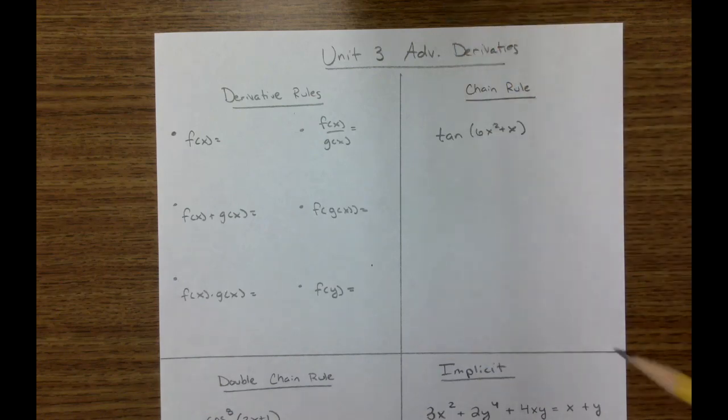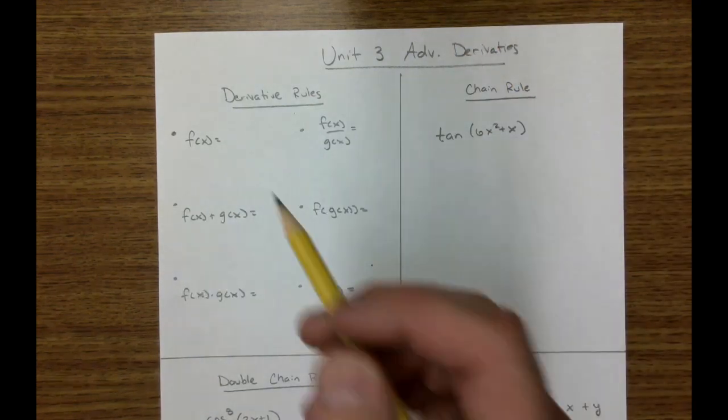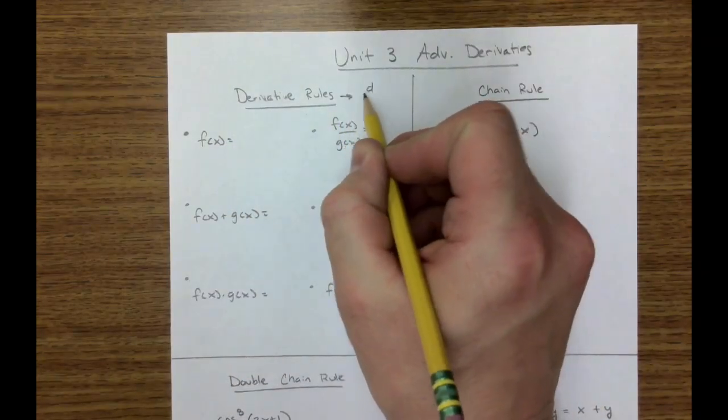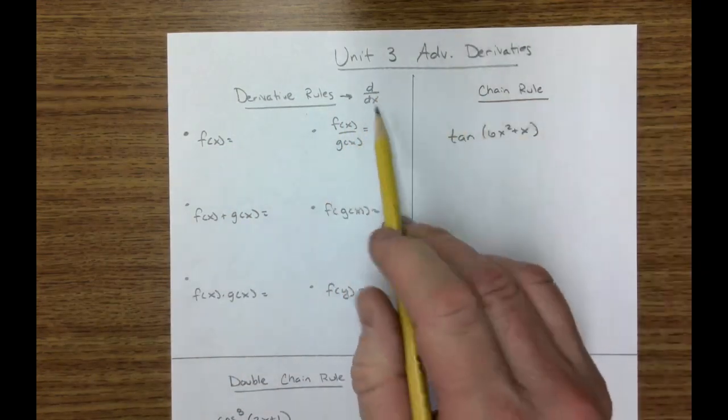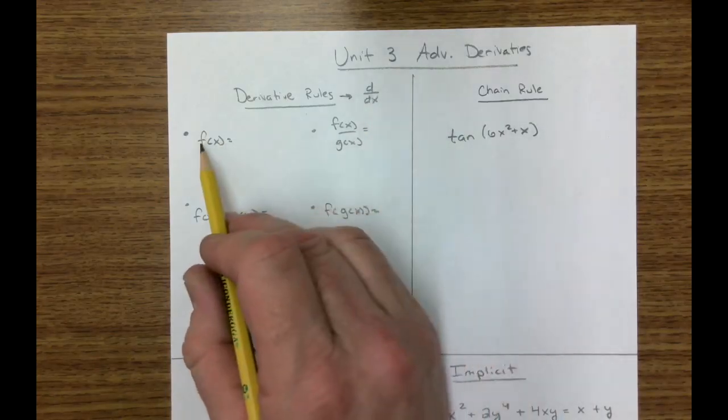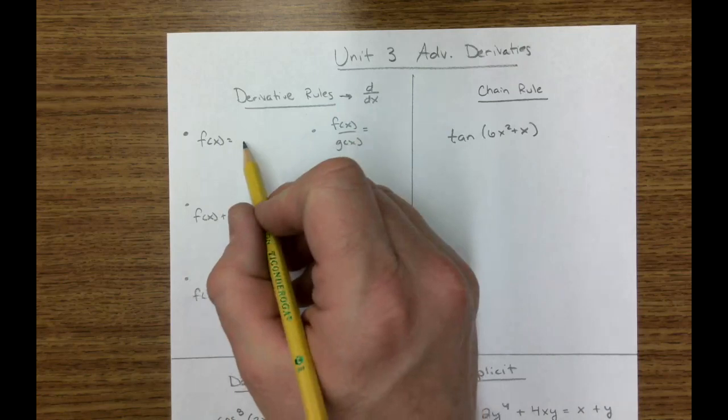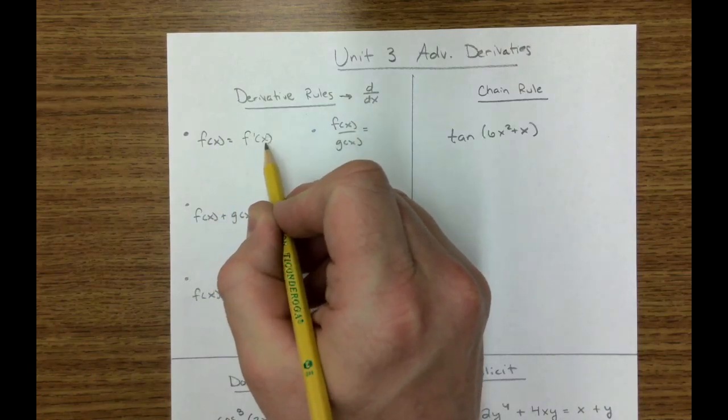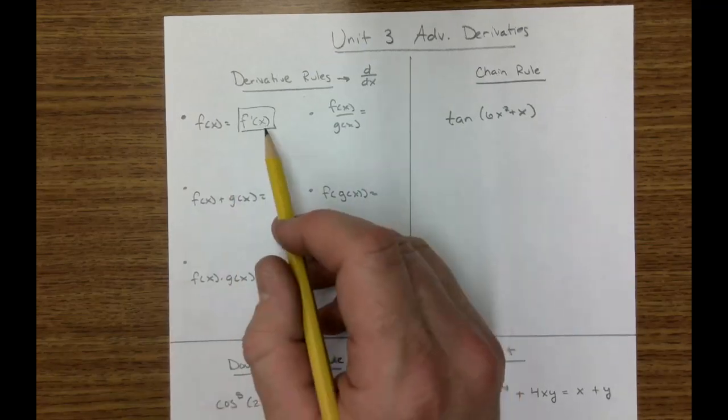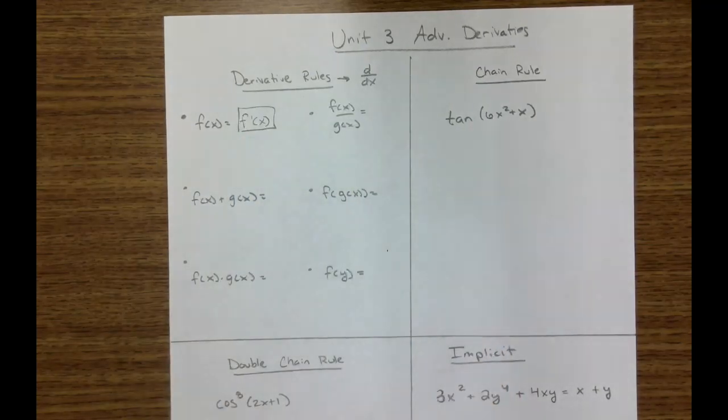First, we need to know some basic derivative rules. If we have a function and we take the derivative, and we are taking the derivative with respect to x, how is this function changing with respect to x? Well, we don't have the function here, so the notation is simply f of x prime. That's our notation for we've taken the derivative.